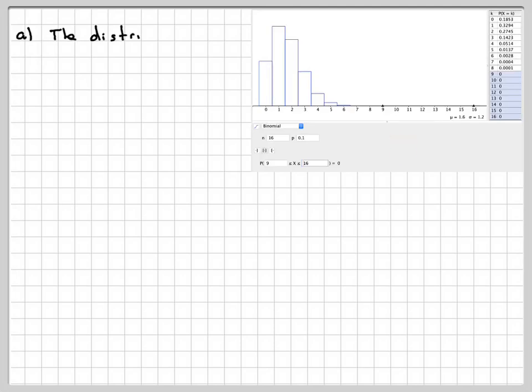So here we have the screenshot. The distribution is what's known as positively skewed. It has a positive skew because it tails off in the positive direction.